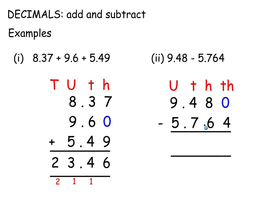Some use the borrow-payback method: if you make that a 10, giving that a 1 here, you pay back a 1 to that 6 and make it 7. It doesn't matter which method you use — it's simply a normal subtraction. 4 from 10 is 6, reduce the 8 to a 7, borrow off the 9 to make 14, and so on. Line up the decimal points — they stay in the same position.